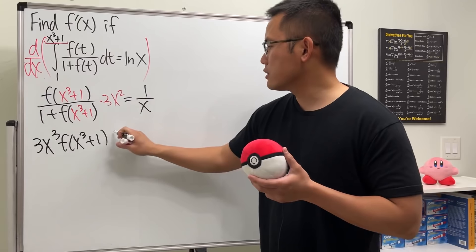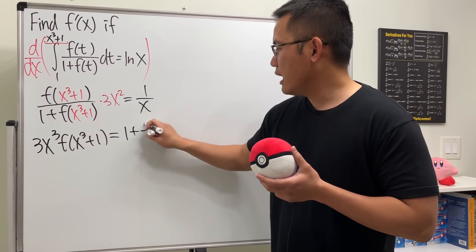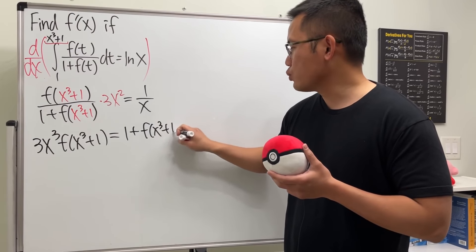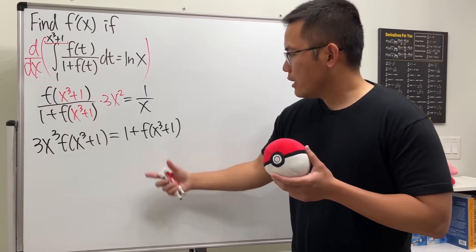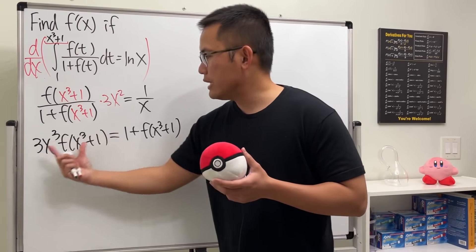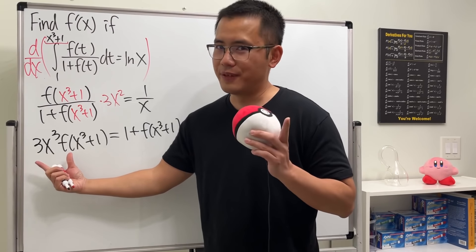And then we will multiply this to here, so we will just have 1 + f(x^3 + 1). And now let's do two steps right here. Let's bring this to the other side. So that's the first step. It's three steps, three steps.